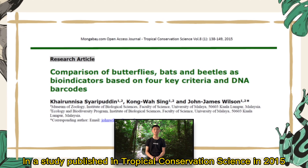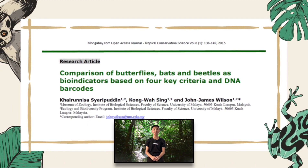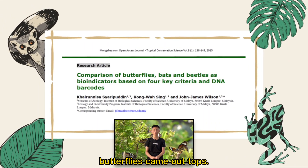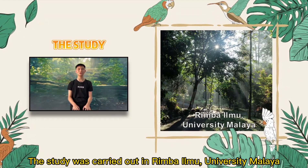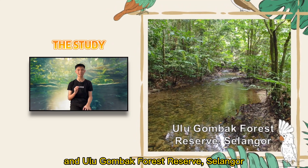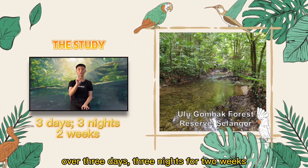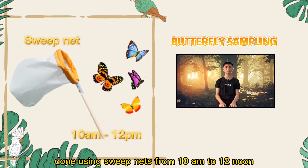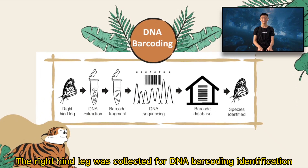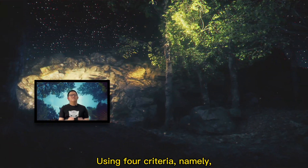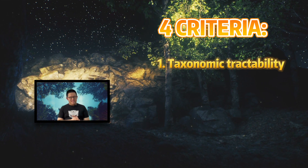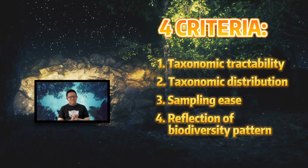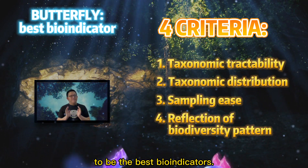In a study published in Tropical Conservation Science in 2015, comparing butterflies, beetles, and bats as bio-indicators, butterflies came out on top. The study was carried out in Rimba Ilmu, University of Malaya, and Ulu Gombak Forest Reserve, Selangor, over three days and three nights for two weeks. Butterfly sampling was done using sweep nets from 10am to 12 noon. The right hind leg was collected for DNA barcoding identification. Using four criteria — namely taxonomic tractability and distribution, sampling ease, and the reflection of biodiversity patterns — butterflies were identified to be the best bio-indicators.